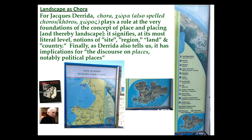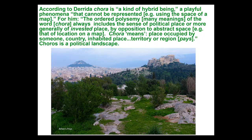When you live in the center of an archipelago like this, you have a moral obligation not to misuse the commons, or else it won't work — the same as with sheep raising, if your neighbor steals your sheep you can't have a commons. According to Derrida, Kora plays a role at the very foundations of the concept of place and placing, and thereby landscape. It signifies, at its most literal level, notions of site, region, land, and country. Kora is a kind of hybrid being — a playful phenomenon that cannot be represented using the space of a map. Its ordered polysemy always includes the sense of political place, by opposition to abstract space. Kora means 'place occupied by someone, country, inhabited place, territory, or region.' Kora is a political landscape.